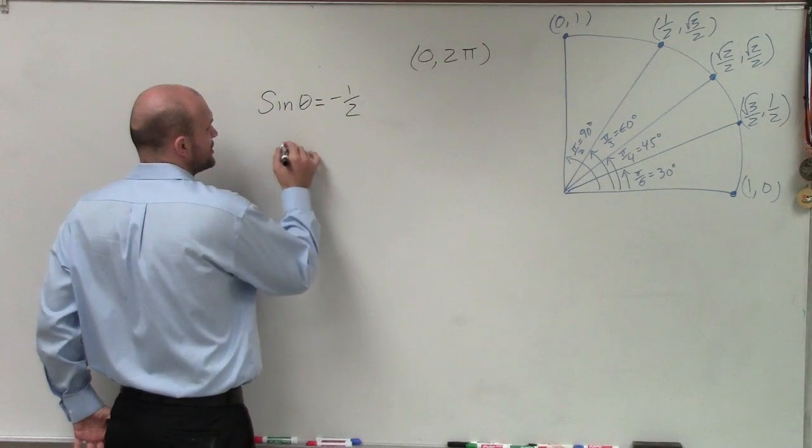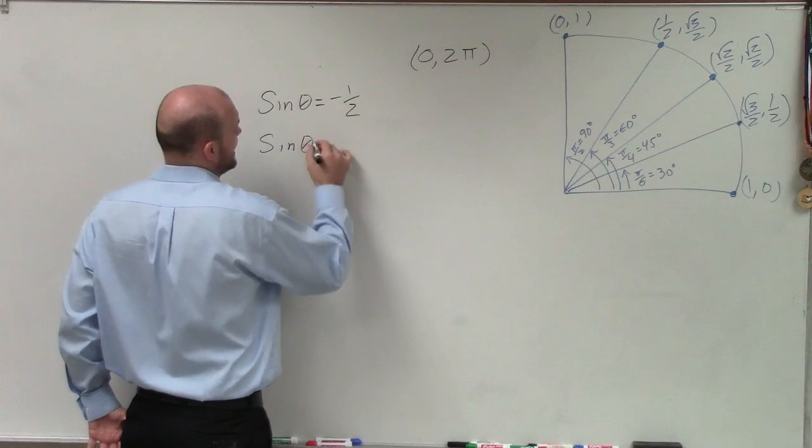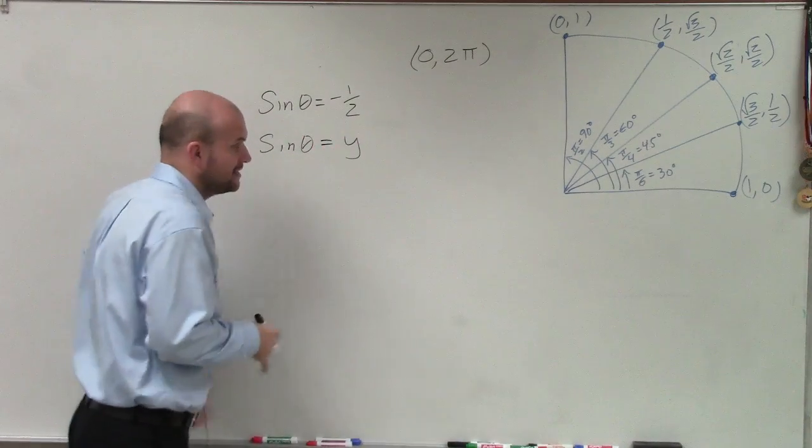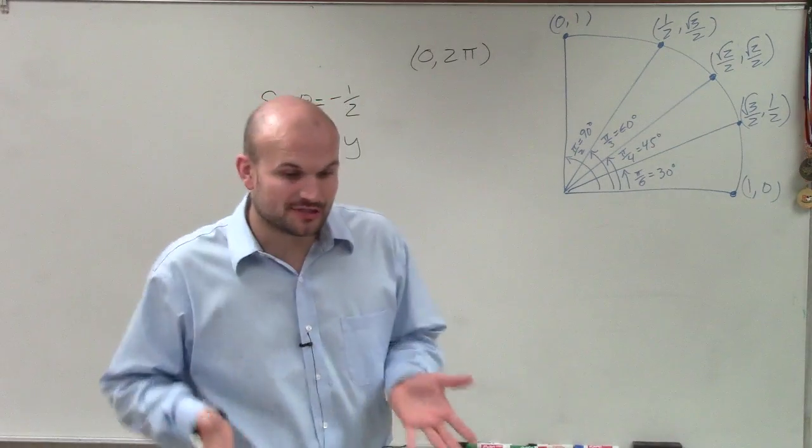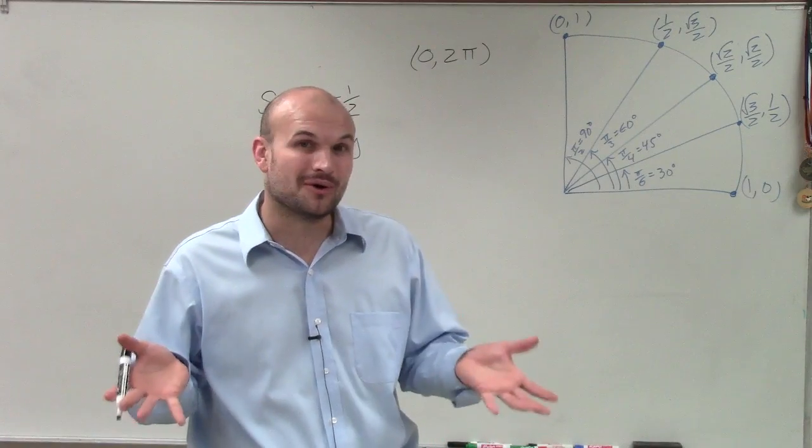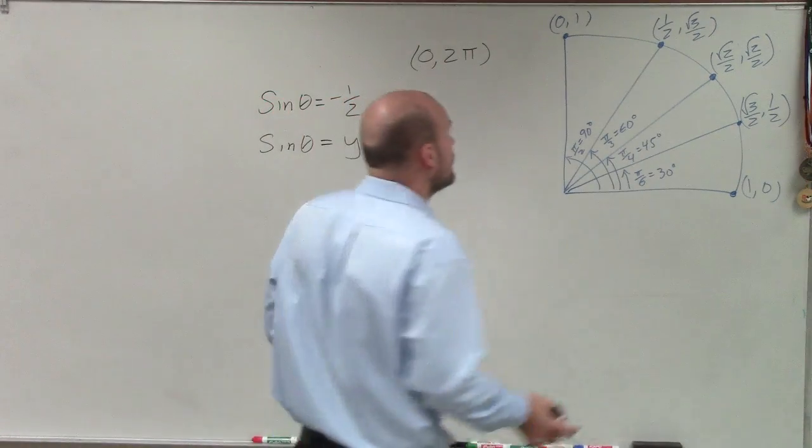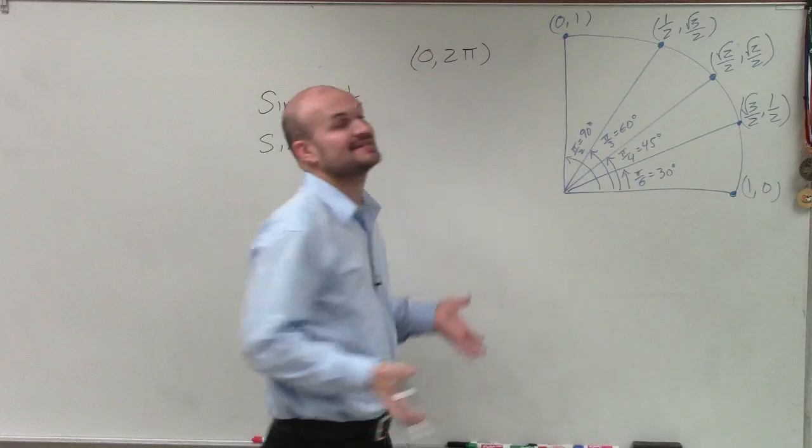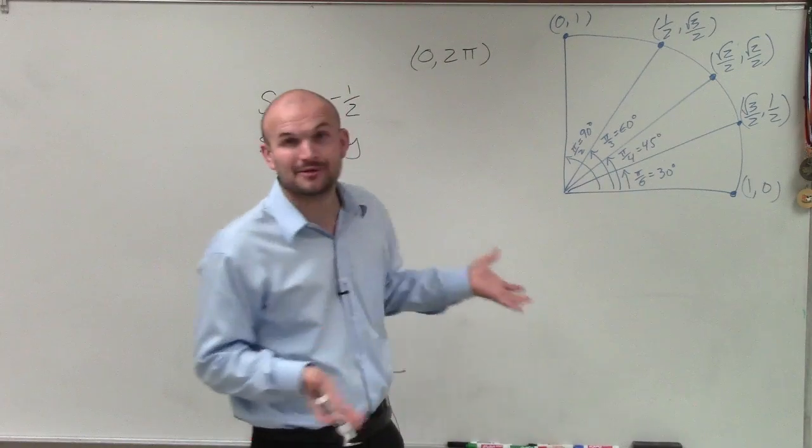Now remember, when we have a point on the unit circle, we know that the sine of an angle is equal to the y-coordinate. So therefore, I need to look at where on the unit circle is my y-coordinate equal to negative one-half. Well, in this first quadrant, we know everything is going to be positive, so that's not really going to help us out.